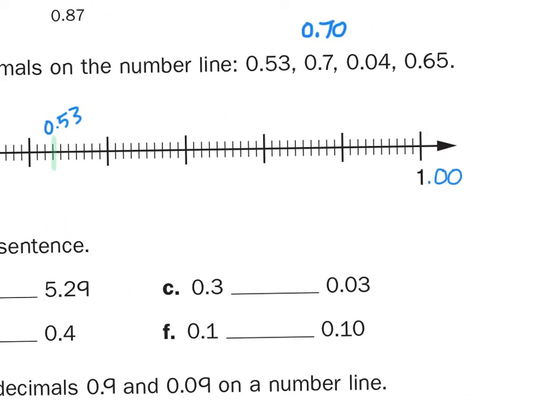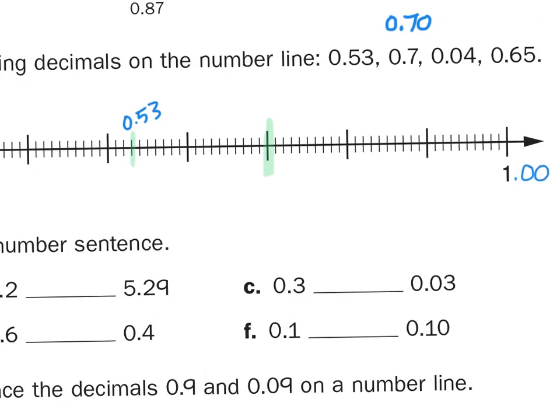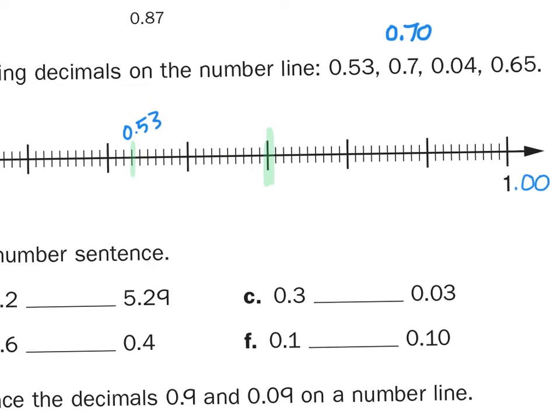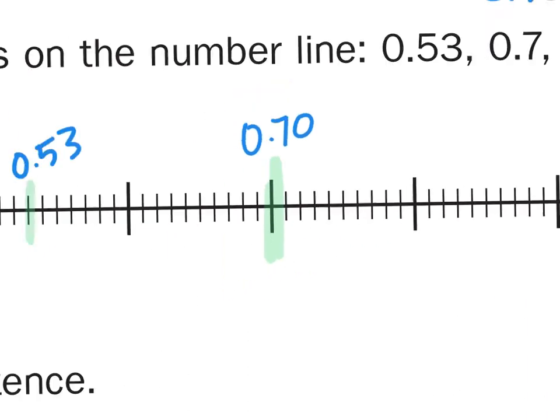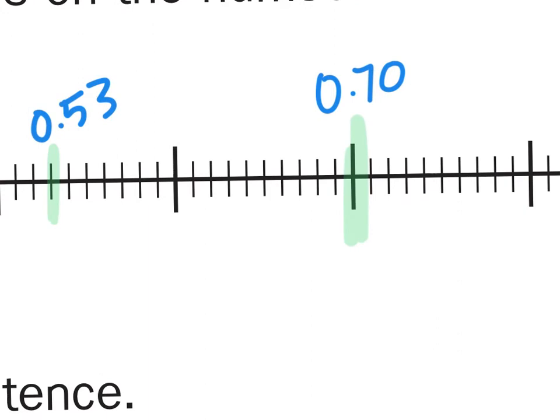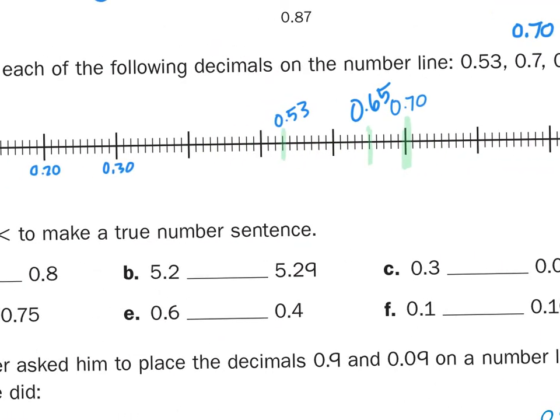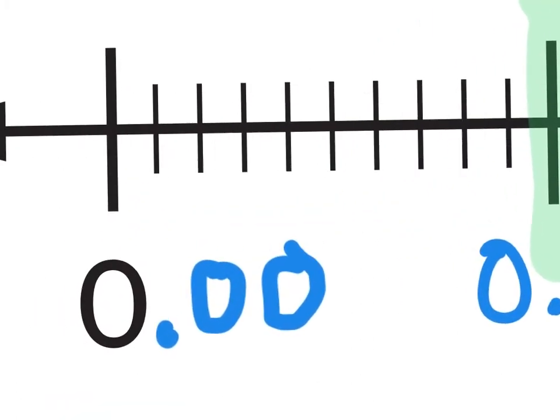The next one I'm going to do is 0.70 or seventy-hundredths. So fifty, sixty, seventy. There it is right there, 0.70. Then I'm going to fill in 0.65 since I'm in this neighborhood. 0.65 would be between the six and the seven, or six-tenths and seven-tenths. It would be one, two, three, four, five right here. 0.65. Then I'm going to scroll back all the way to the beginning of my number line on the left-hand side.